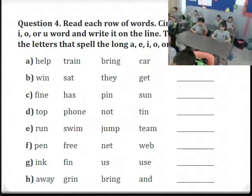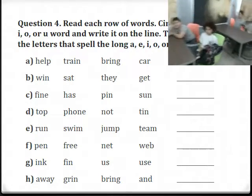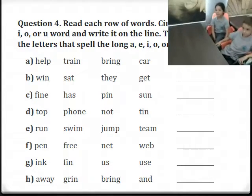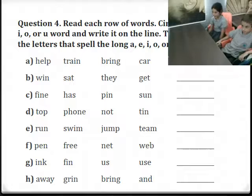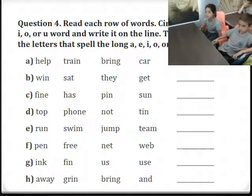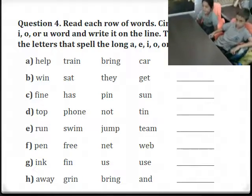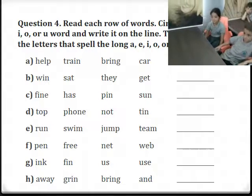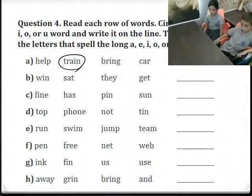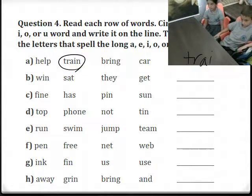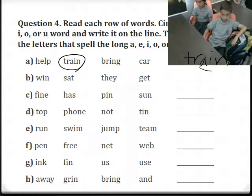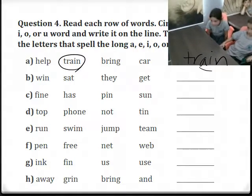Let's do the first one. Read the first row. Which word has a long sound? Train. Excellent — we circle 'train,' write it on the line. Which letters do we underline? A and I — very good, because AI spells the long A sound.